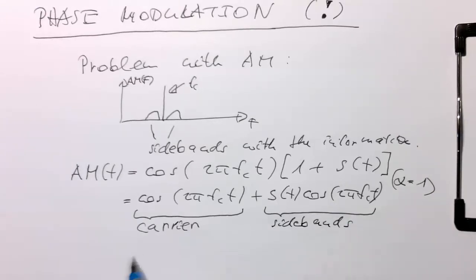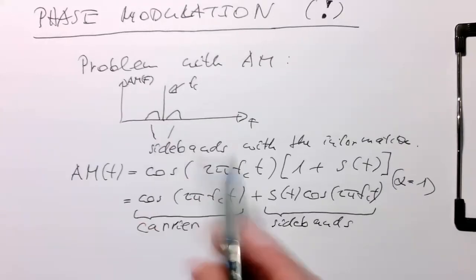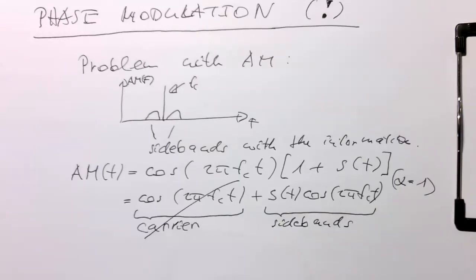And so if we just remove the carrier here, then this nasty peak in the middle here, this FC will just disappear and we're just transmitting the information. And so if I do that,